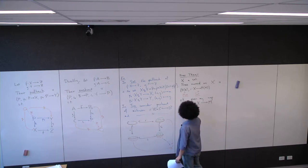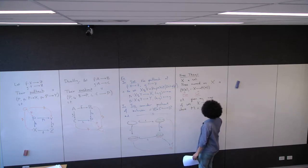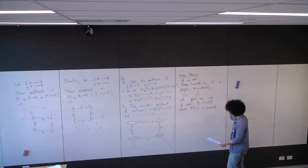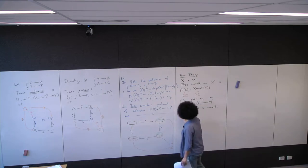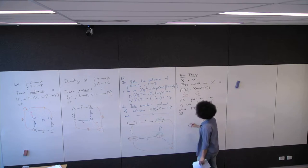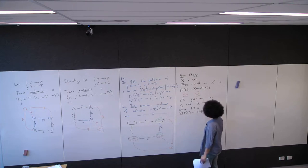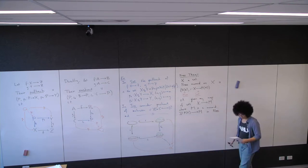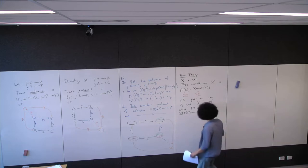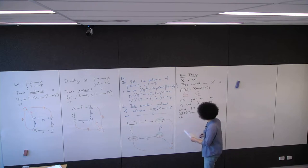It is one of these such that given any map of sets from X to M, where M is a monoid, there exists a unique map from F(X) to M in the category of monoids — so a monoid homomorphism — such that we have a commuting diagram.